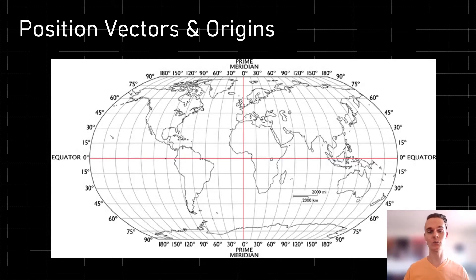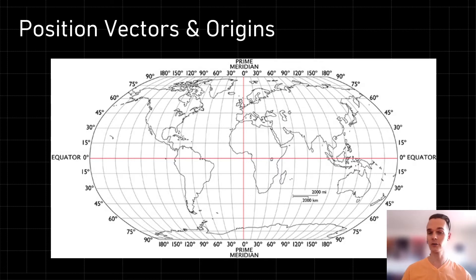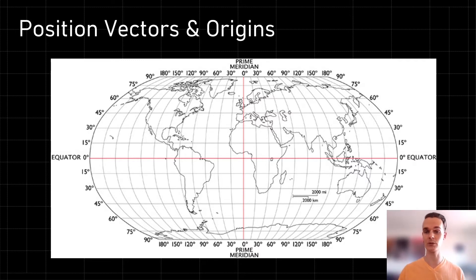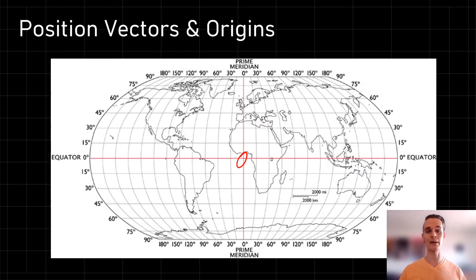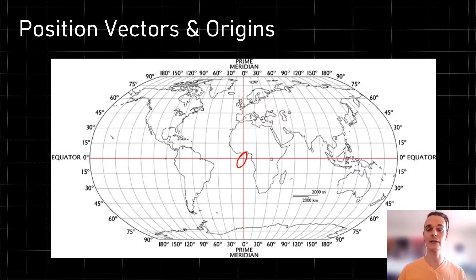So let's talk about what a position vector is. In order to discuss this, I have brought up a map of the Earth. Every single map of the Earth that we use on a daily basis has an origin. The origin for this map would be at zero latitude, zero longitude. This is important because position vectors are defined with respect to an origin.